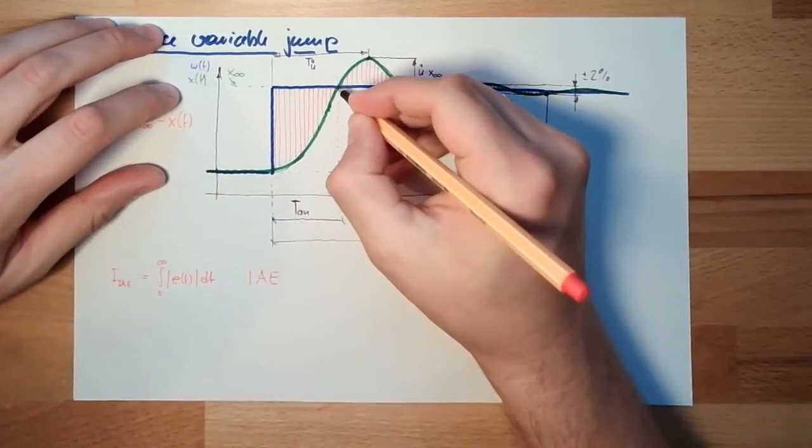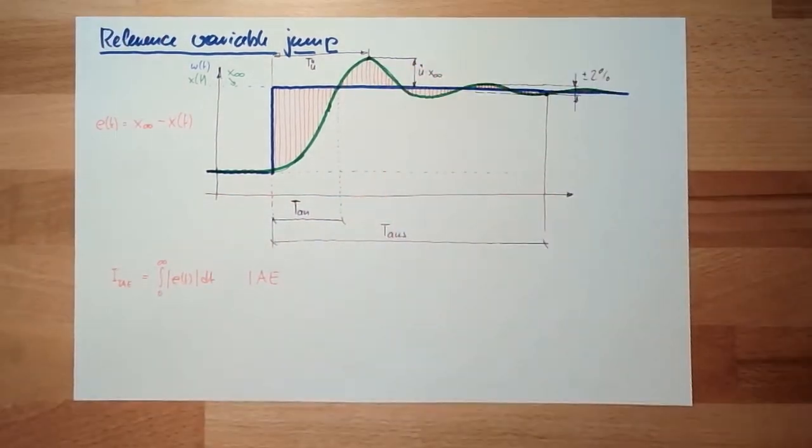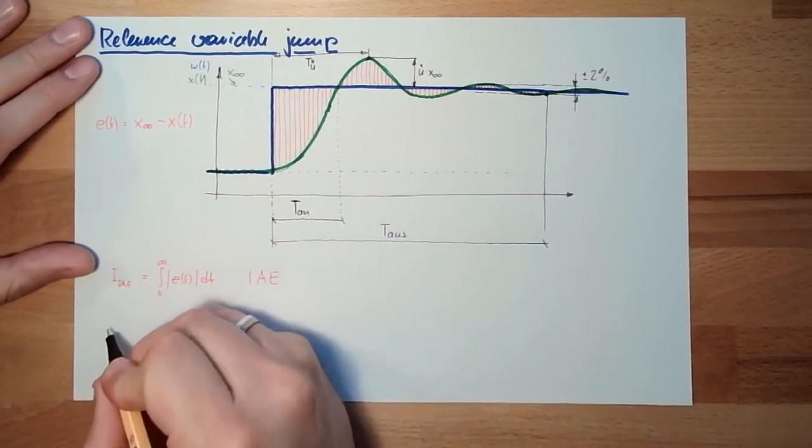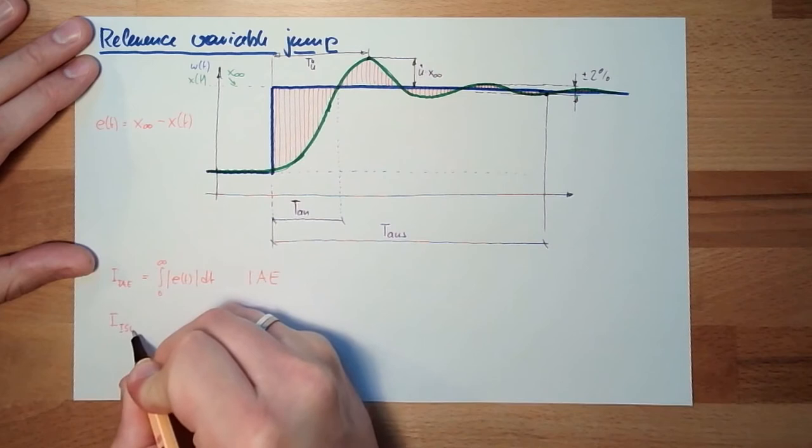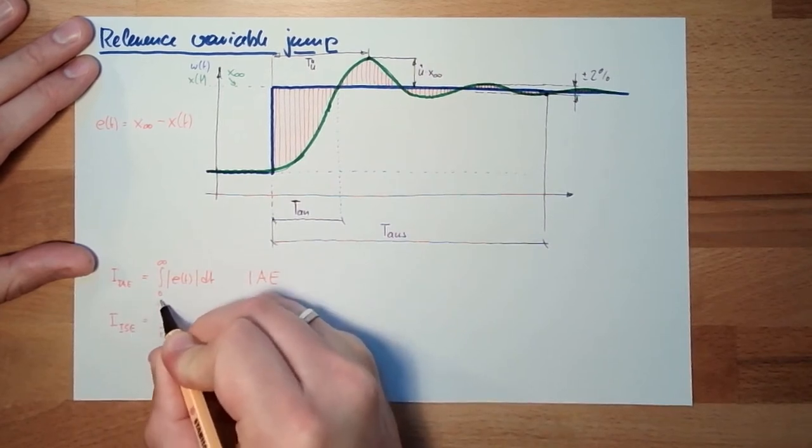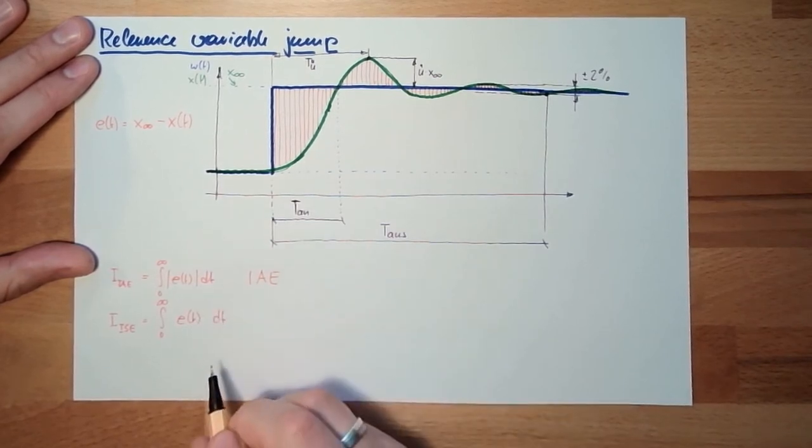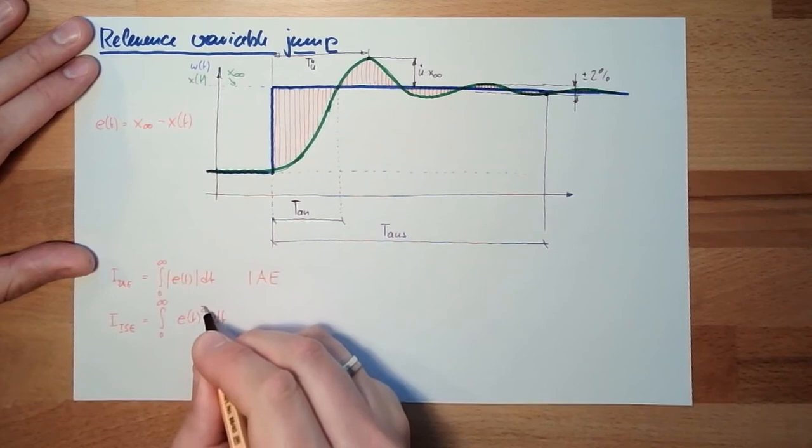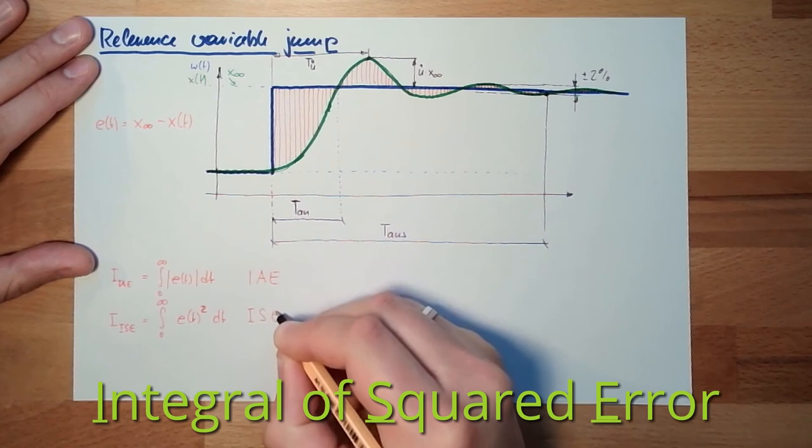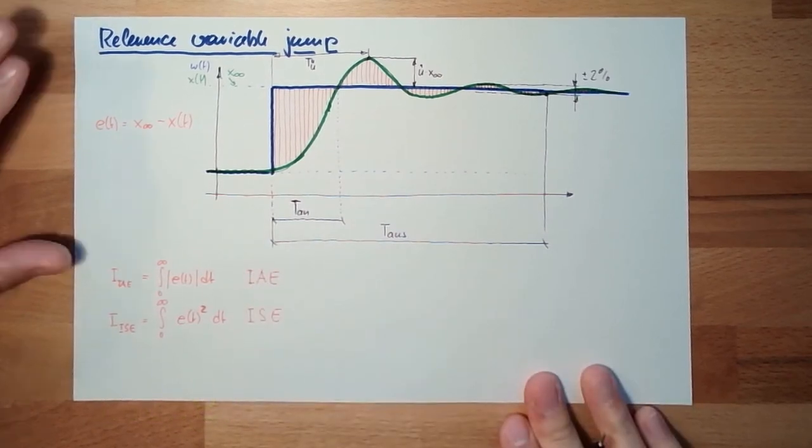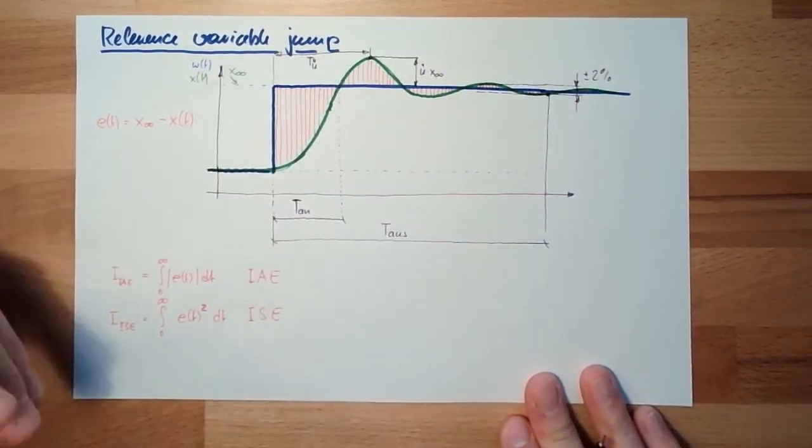The nice thing about squaring is also negative values will get positive. And small changes are smaller, big errors are bigger because of the square. So it's the quadratic criteria integral of squared error. Also summarize, and also e from t. But this time, we just use the square integral of squared errors, ISE. Also a possibility of comparing two things.